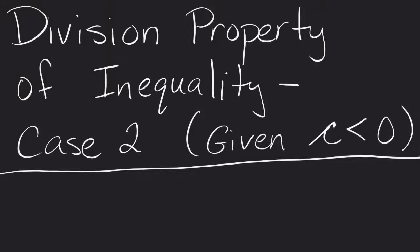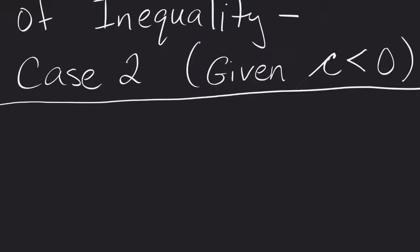Division and property of inequality, case 2. This is the case where we're given the value of c is less than 0. Now this is the trickier case because we've really got to pay attention to what's happening here. We've got to know how inequalities work.